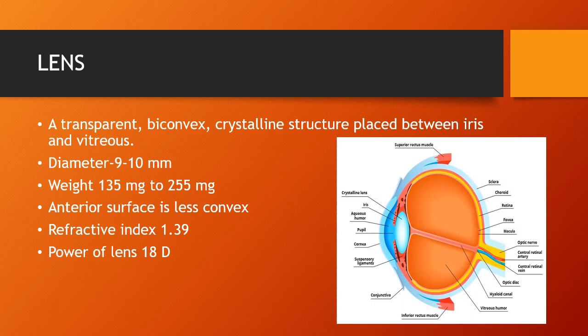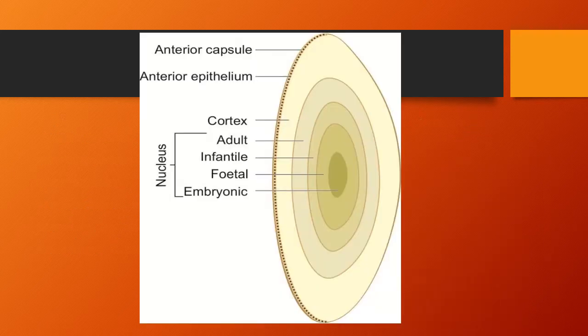First of all, we will study about the lens. Lens is a transparent, biconvex crystalline structure placed between the iris and the vitreous. The diameter of the crystalline lens is around 9 to 10 mm. Weight is about 135 mg to 255 mg. The anterior surface of the lens is less convex compared to the posterior surface. Refractive index is around 1.39 and power of the lens is around 18 diopters.